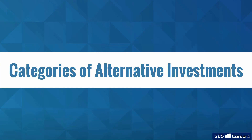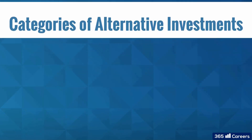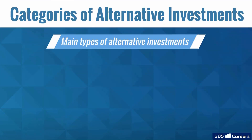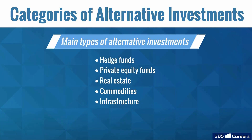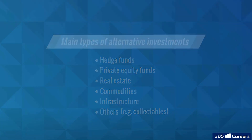In this video, we'll outline some of the main types of alternative investments. These are hedge funds, private equity funds, real estate, commodities, and infrastructure. We will also discuss other alternatives that do not fall under any of these categories, such as collectibles. Let's begin right away.